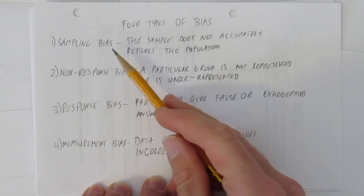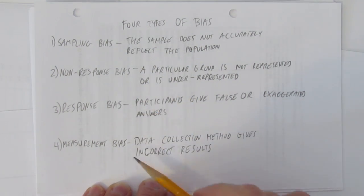There are four types of bias: sampling bias, non-response bias, response bias, and measurement bias.